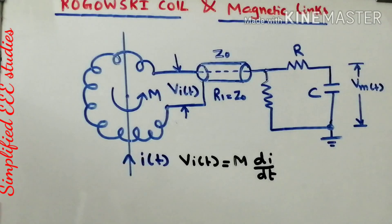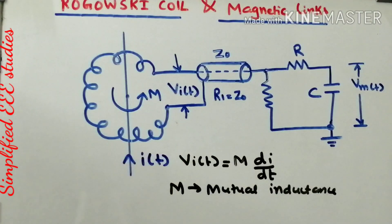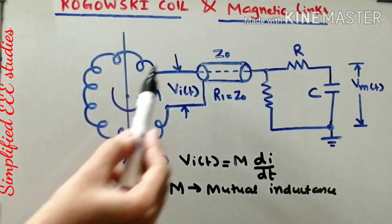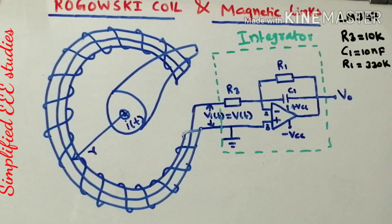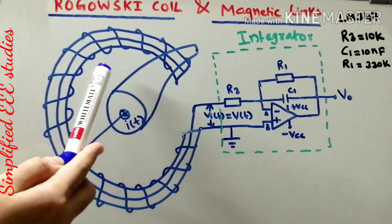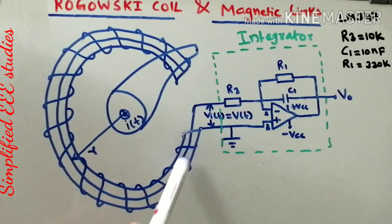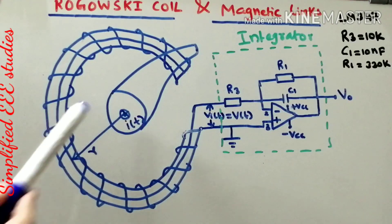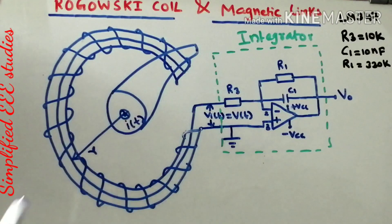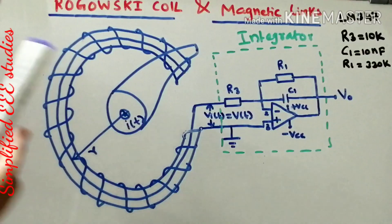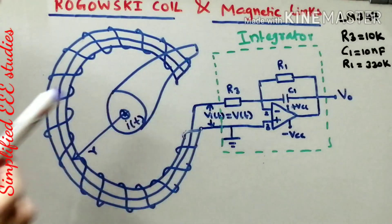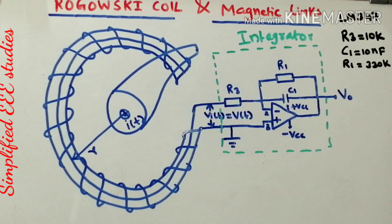M represents the mutual inductance of the Rogowski coil. Now I have drawn the modified circuit diagram of the Rogowski coil. It is basically a toroid — a toroidal shaped coil. The current carrying conductor passes through the center of the Rogowski coil, as seen in this three-dimensional view.